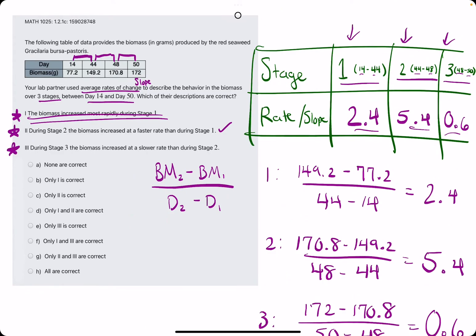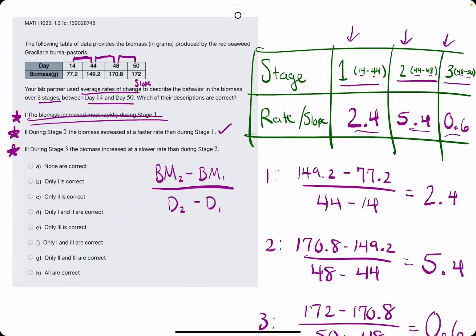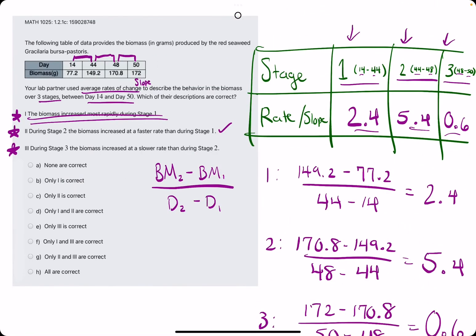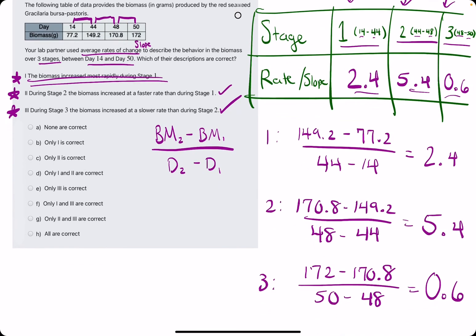Number three. During stage three, the biomass increased at a slower rate than during stage two. So at stage three, we had 0.6. At stage two, we had 5.4. So 0.6 is slower than 5.4. 3 is slower than 2. That is a true statement.